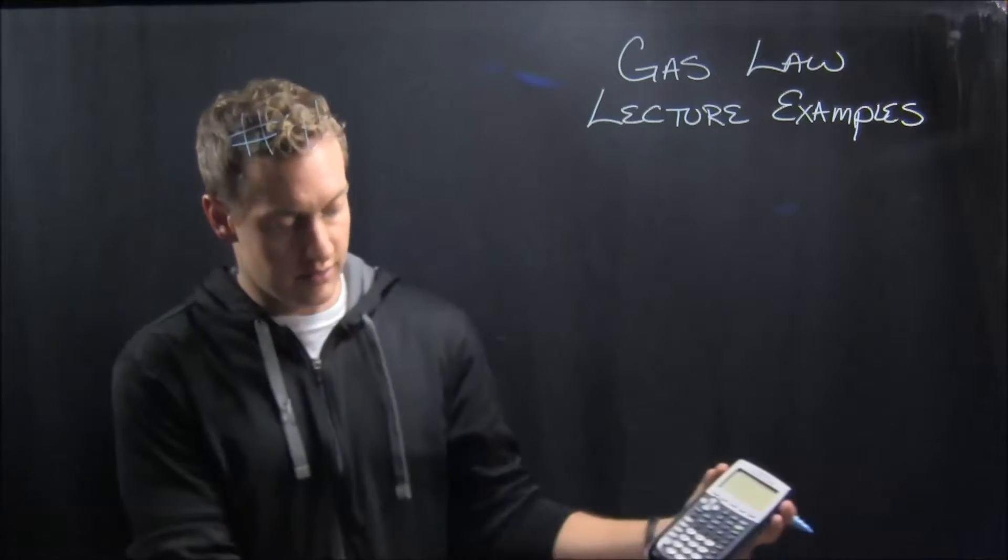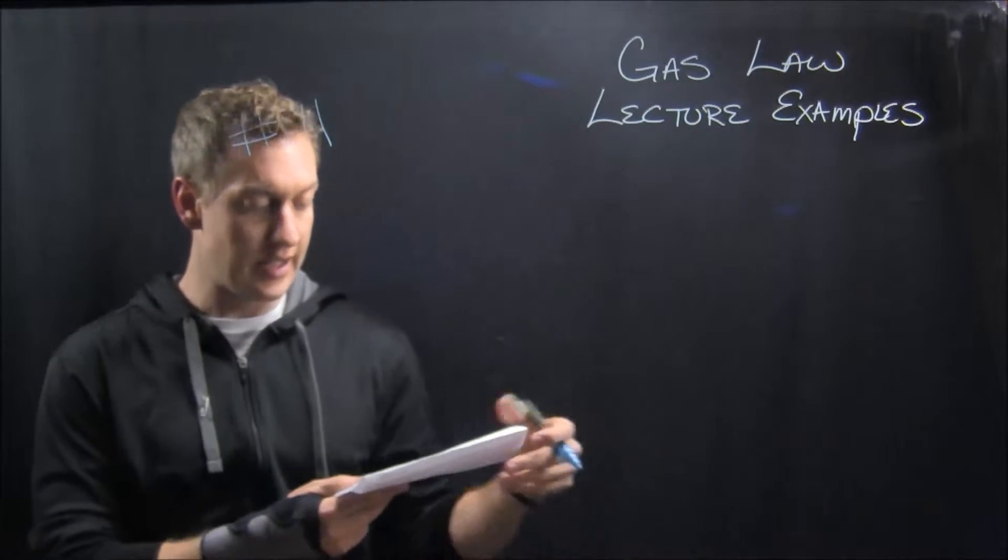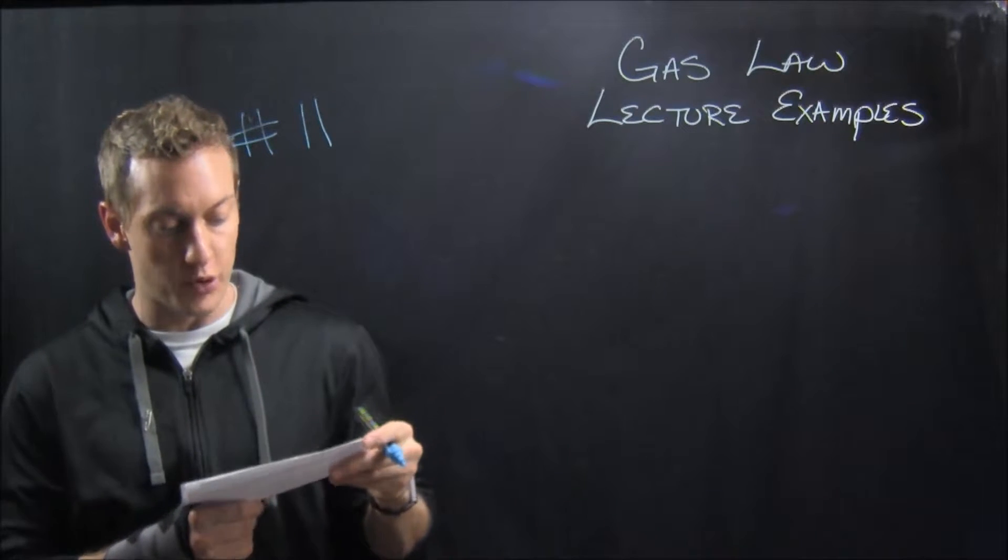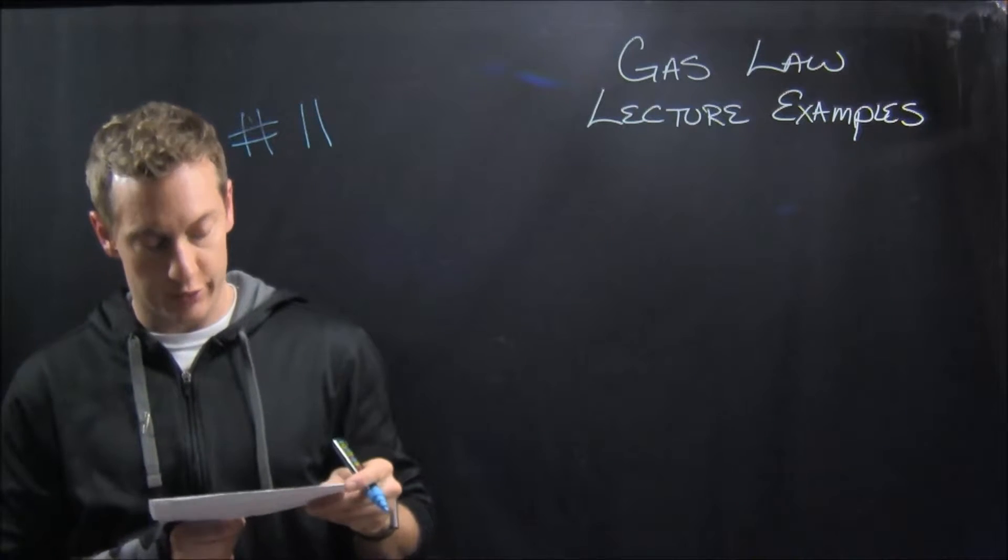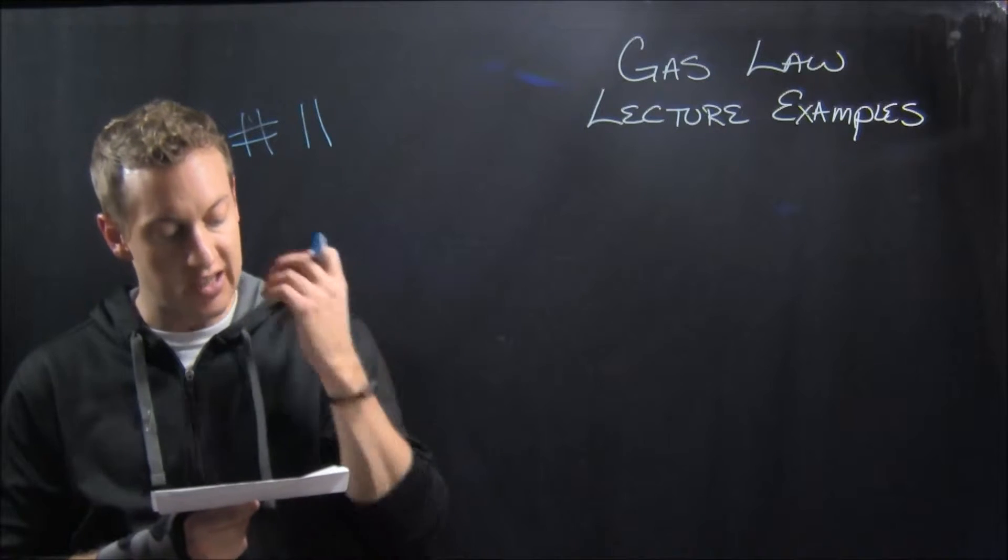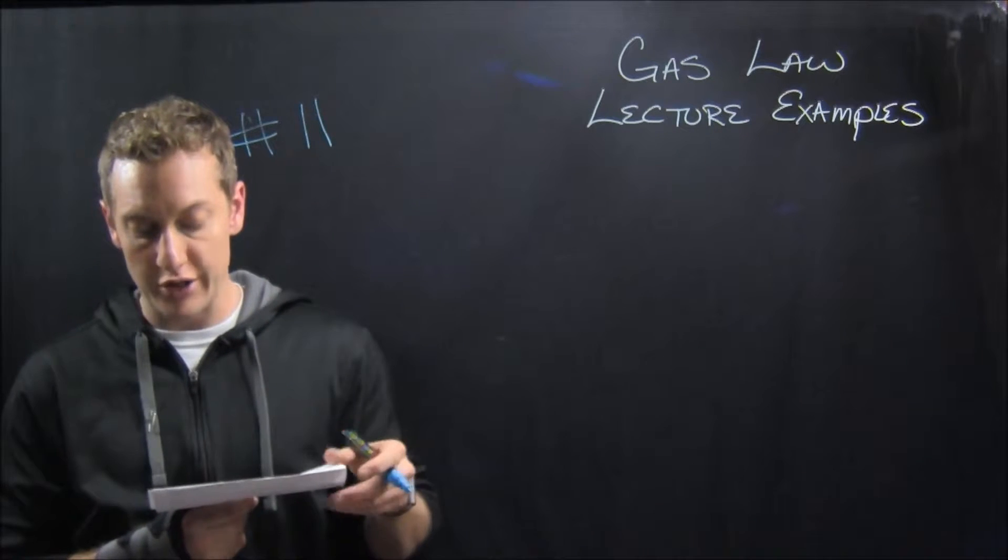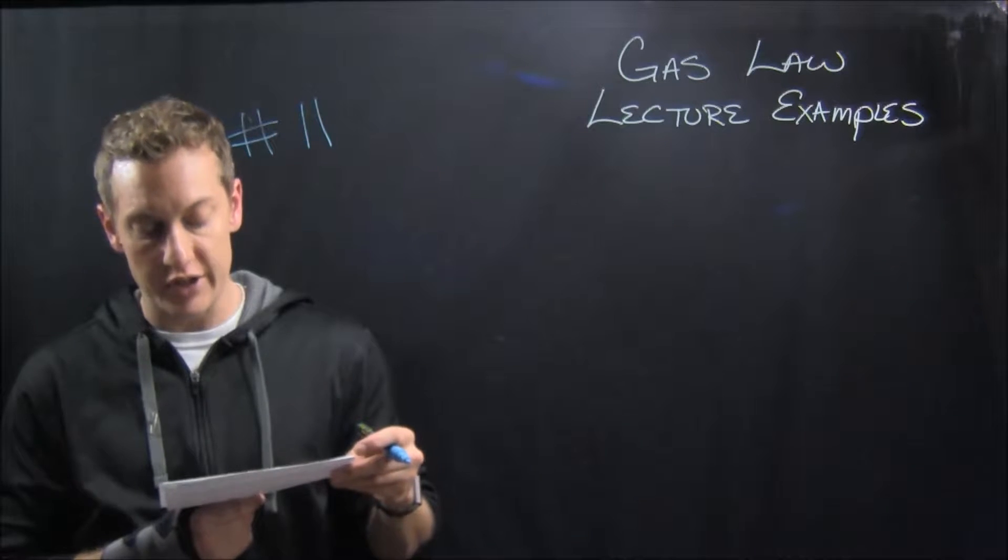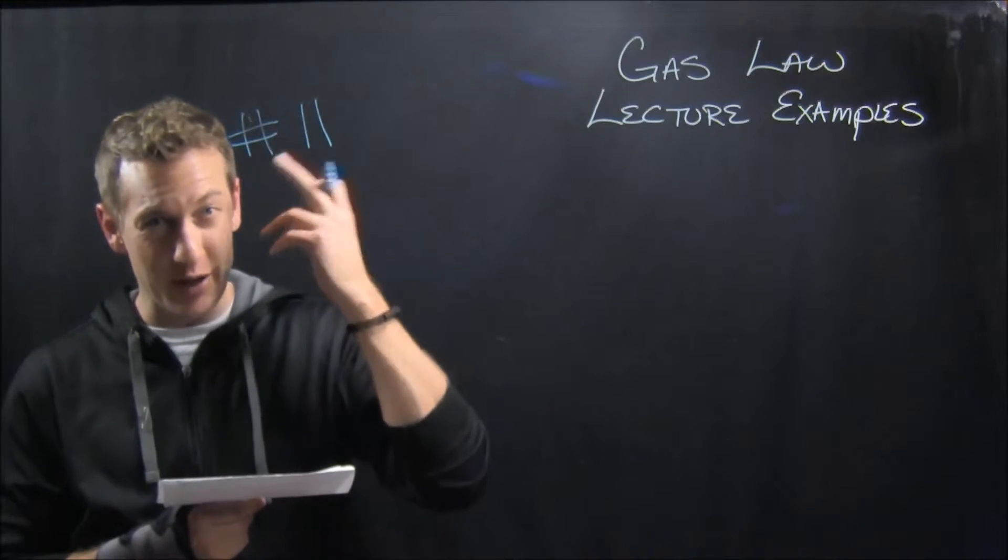Number 11 asks, calculate the number of moles of ammonia gas contained in a 3-liter vessel at 3.00 times 10 to the second Kelvin with a pressure of 1.50 atmospheres. So I read this,